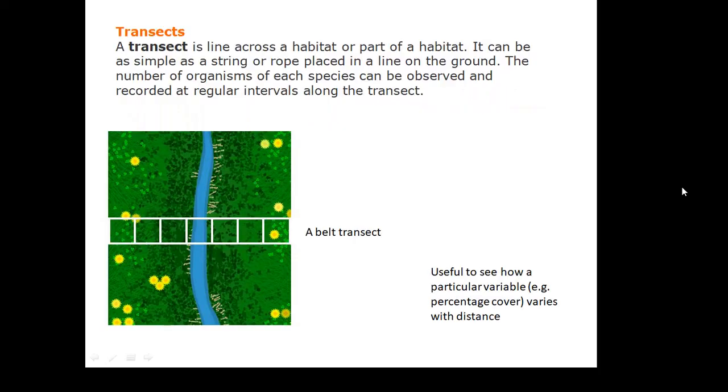This is important, a transect. Now a transect is just basically a line. A line of quadrats is a transect. You would use a transect if your independent variable is distance. If I want to know how the distribution of daisies varies with the distance from a stream or the distance from a path or the distance from a tree.